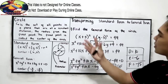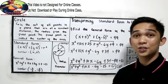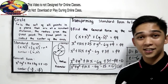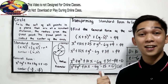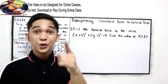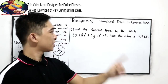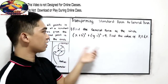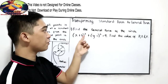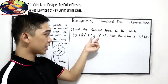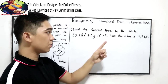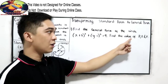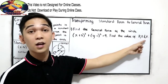That's how to transform standard form to general form. Now, your turn — I want you to answer the next problem. Find the general form of the circle: quantity x plus 5 raised to 2, plus quantity y minus 1 raised to 2, is equal to 9. Find the value of D, E, and F.